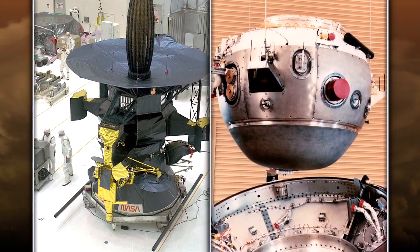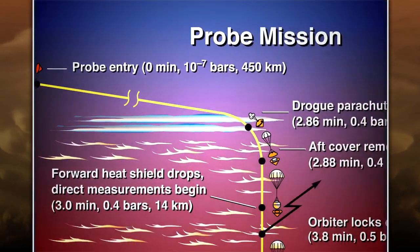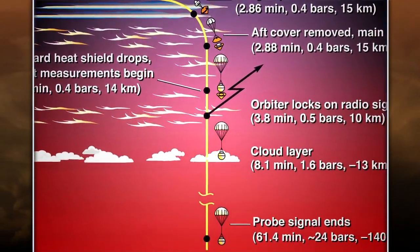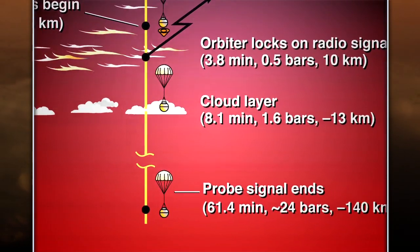Hotspots have been previously studied by the Galileo atmospheric probe. In 1995, the spacecraft released a probe that descended into Jupiter's atmosphere, specifically at a hotspot.